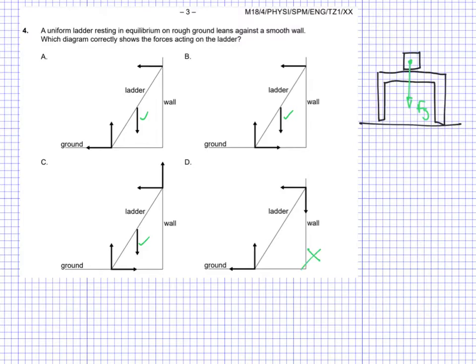Let's keep going with our box on the table. We know the forces need to be equal because the box is not moving — F-net is zero. So if we have a vector arrow for FG downward, there should be one coming back exactly the same to the original point, and that is the normal force.